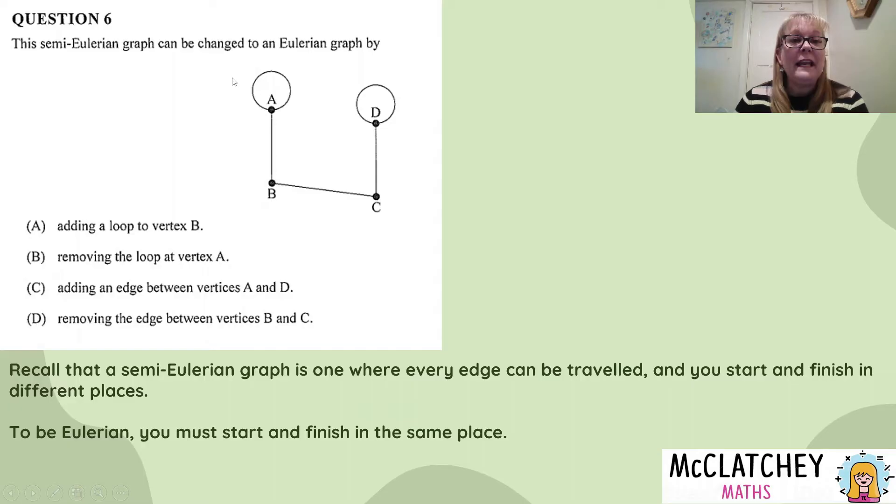Firstly, if we add a loop to vertex B, so here's vertex B on our diagram. If we put a little loop in there, we're still going to have the same virtual network, except we're going to loop around there and come back, still finishing at D, not back at A. So A is not an option for us.